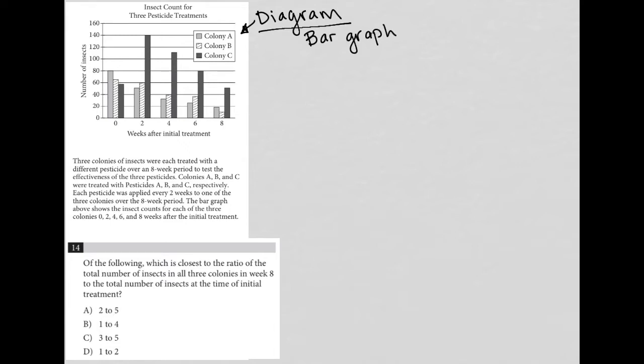Okay, so this bar graph is all about the insect count for three pesticide treatments. We have three different colonies: colony A, colony B, and colony C. We can see in our bar graphs how each of those colonies are affected by the pesticides at week zero after initial treatment, so basically at the time of treatment, and then in two-week intervals after that treatment. Our y-axis represents the number of insects. So we can get a good visual on how each colony is impacted over time.